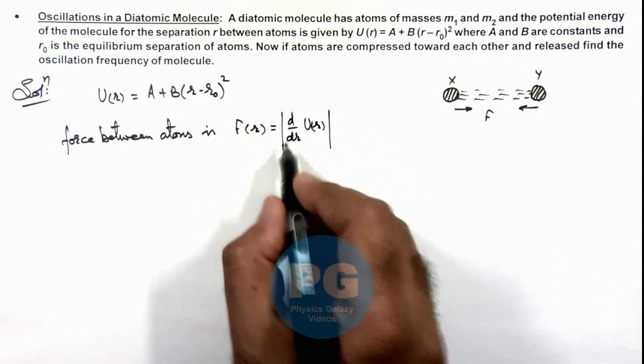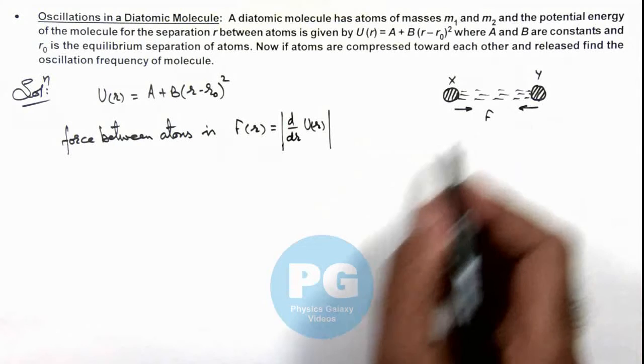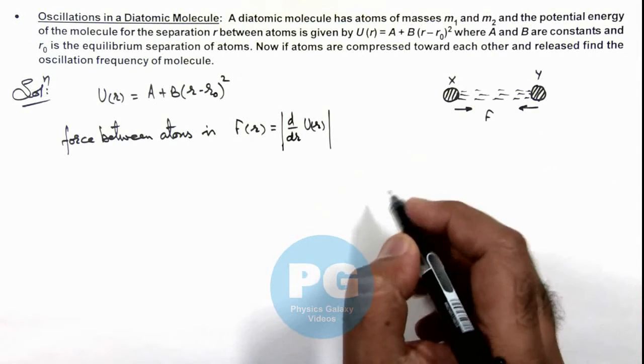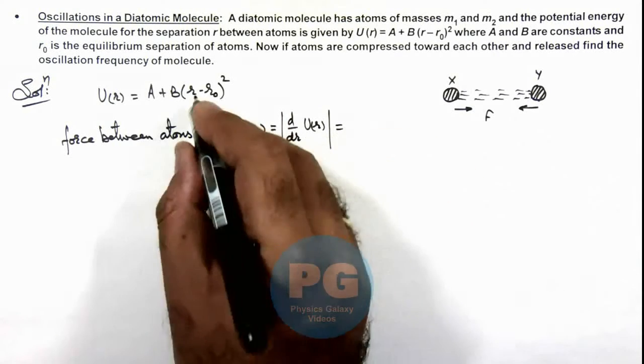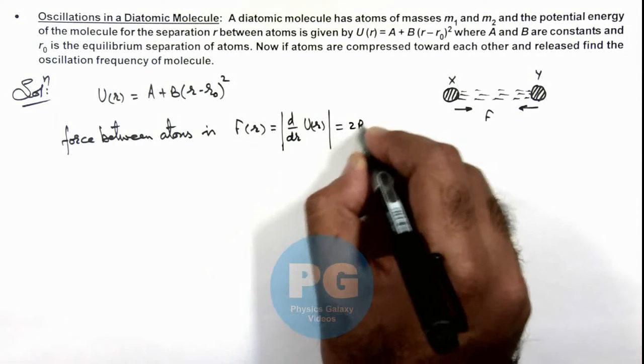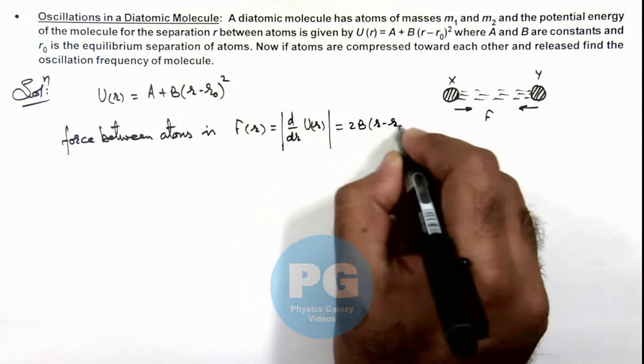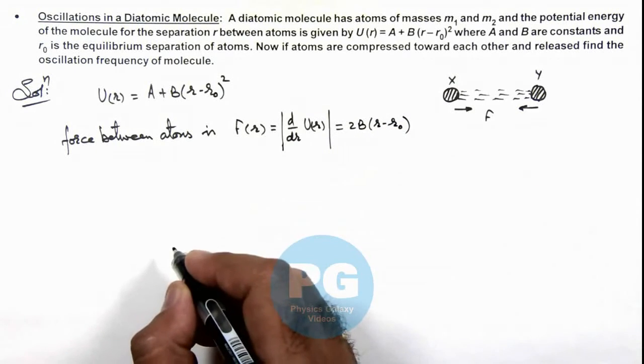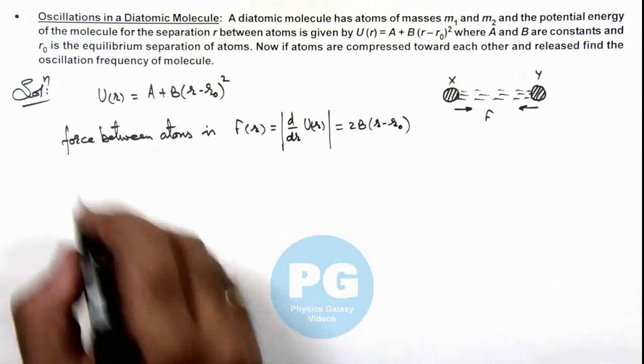Here I am taking it magnitude because direction I am already aware of - this would be attractive force between the two. So on differentiating this, I am getting 2B(r minus r₀).